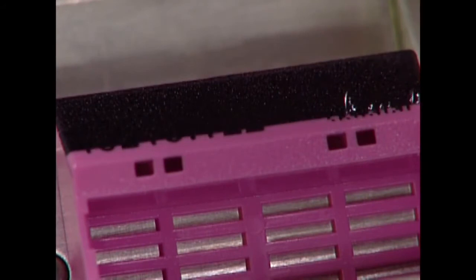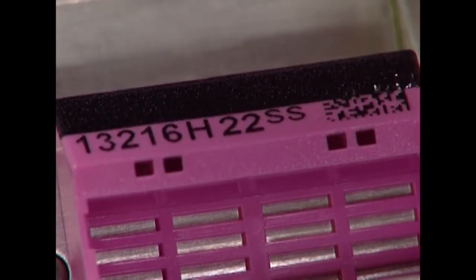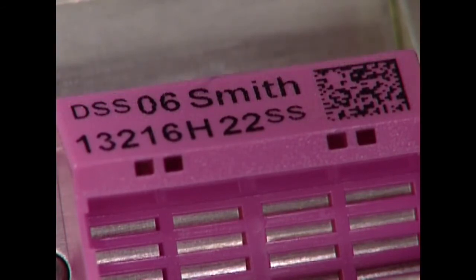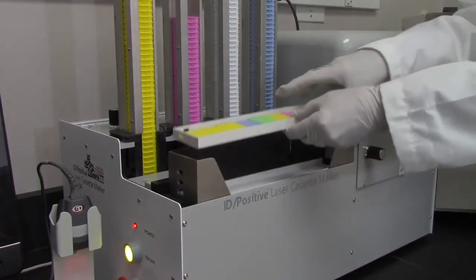The polymer coating on the cassettes is ablated by the internal laser to produce a crisp, clear barcode and readable information that doesn't fade. There is no ink, ribbon, or nozzle that could become clogged.